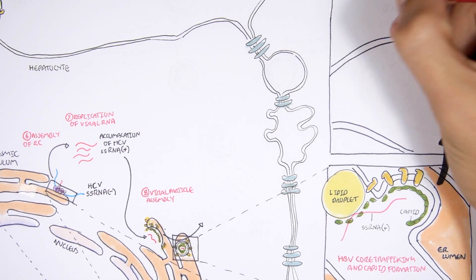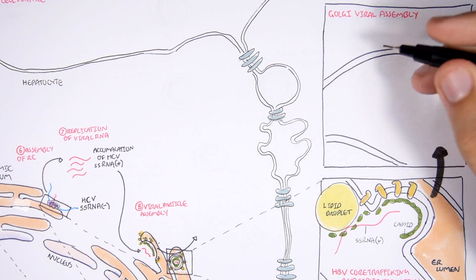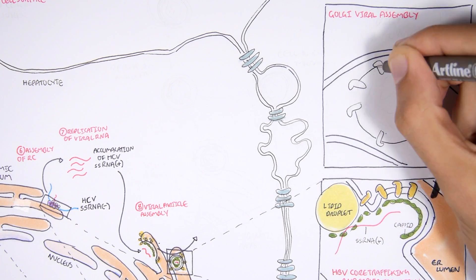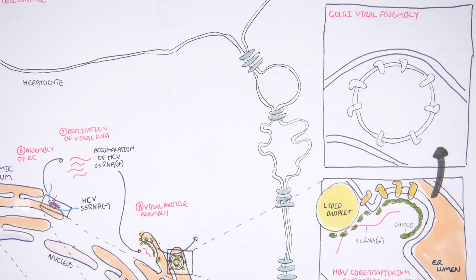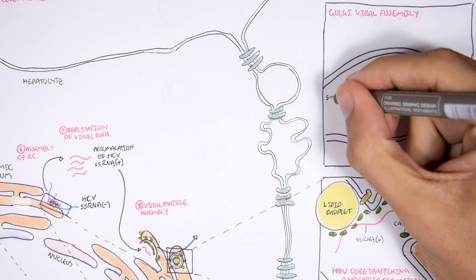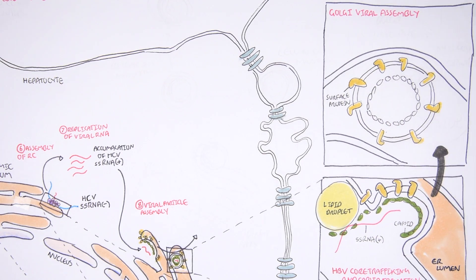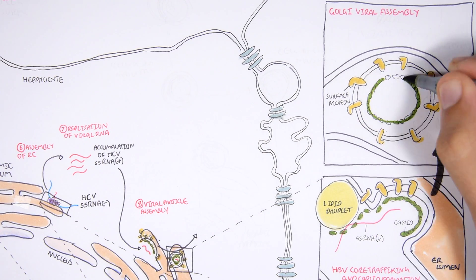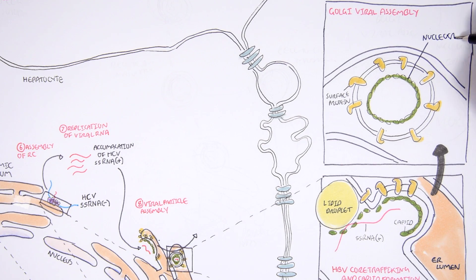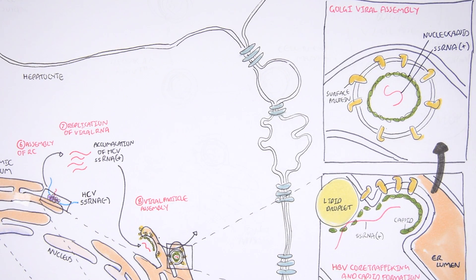Here we have the Golgi viral assembly. The viral particle has already been formed, with surface proteins on the lipid membrane — the envelope — and the nucleocapsid, which contains the genetic material of the hepatitis C virus: a positive single-stranded RNA.